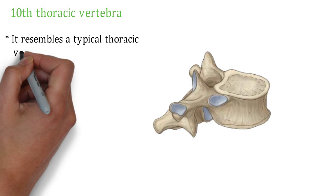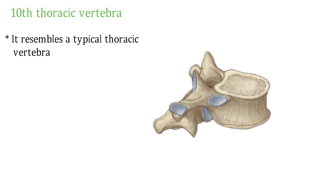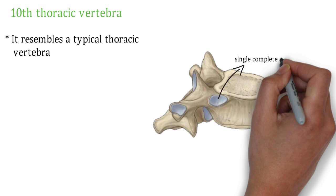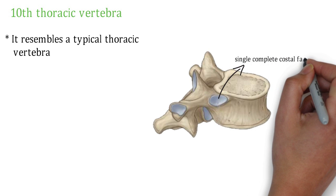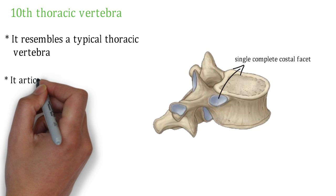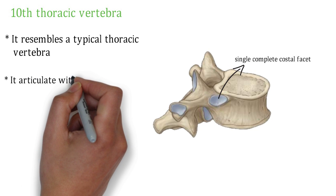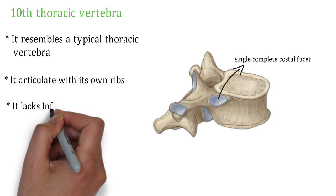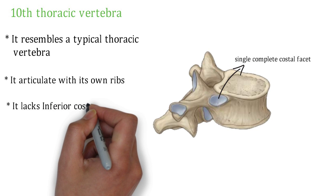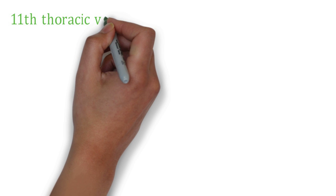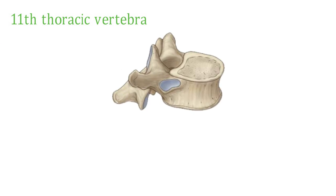The 10th thoracic vertebra, in lateral view, resembles a typical thoracic vertebra. It has a single complete costal facet that articulates with its own rib, but it lacks an inferior costal facet.